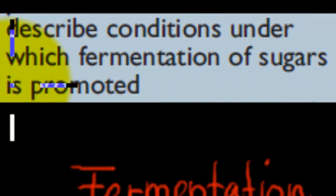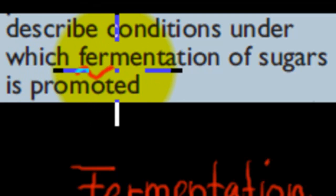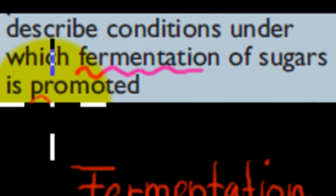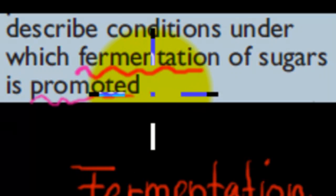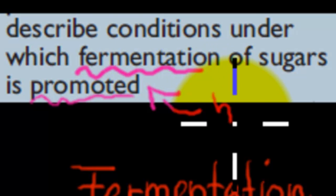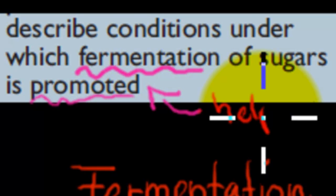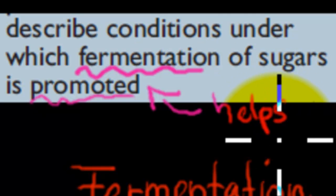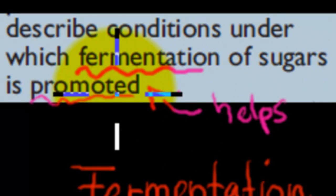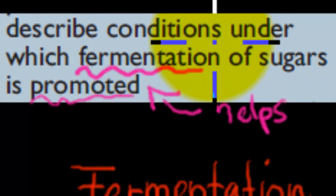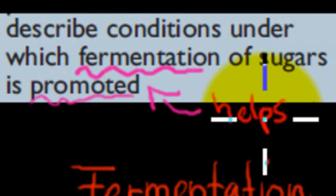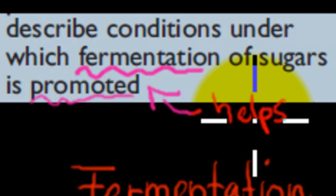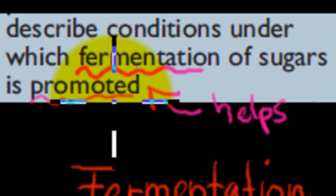First, there are two words we need to go over: fermentation and promoted. Promoted just means helps — describe conditions under which fermentation of sugar is helped or made to go faster. That's what promoted means.